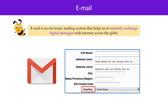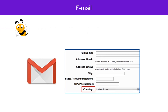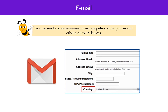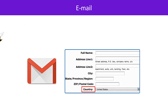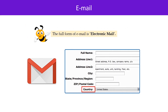Email is an electronic mailing system that helps to instantly exchange digital messages over the internet across the globe. We can send and receive emails over computers, smartphones, and other electronic devices. The full form of email is electronic mail.